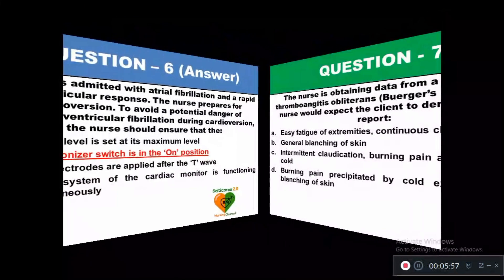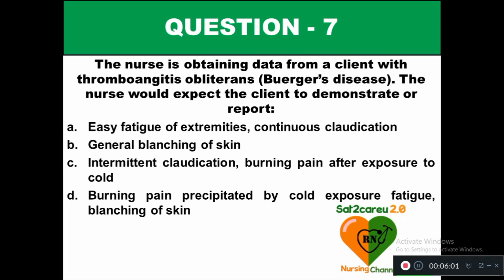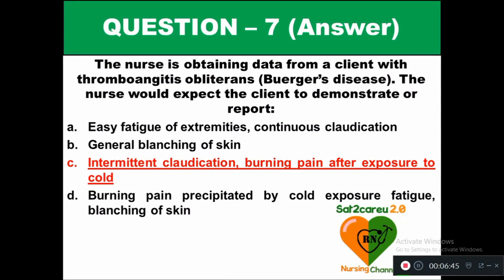Question 7: The nurse is obtaining data from a client with thromboangiitis obliterans (Buerger's disease). The nurse would expect the client to demonstrate or report: option A easy fatigue of extremities and continuous claudication, option B general blanching of skin, option C intermittent claudication and burning pain after exposure to cold, option D burning pain precipitated by cold exposure, fatigue, and blanching skin pain. The right answer is option C — intermittent claudication and burning pain after exposure to cold.